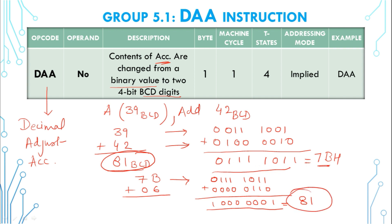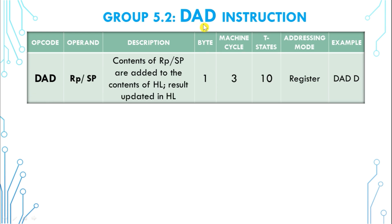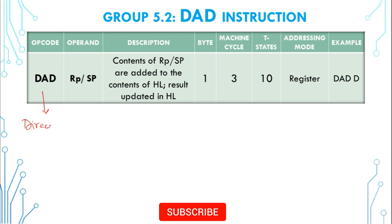Moving ahead, the next instruction is DAD. This instruction is used to directly add two 16-bit numbers. DAD is the short form of Direct Add or Direct Addition. This instruction will directly add the contents of the HL register pair with the operand contents, and the operand can be any general purpose register pair or the stack pointer value. Let us understand by the example DAD D.